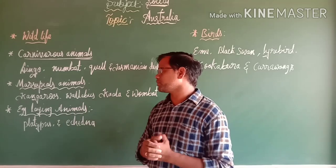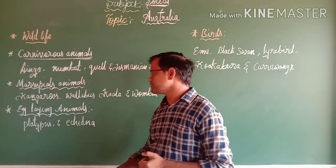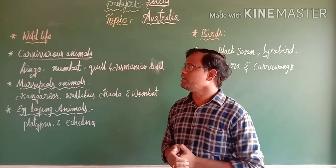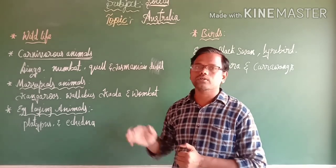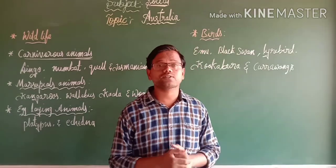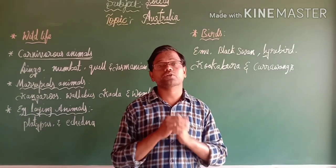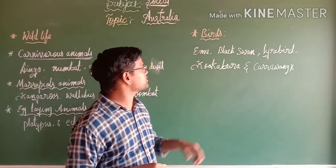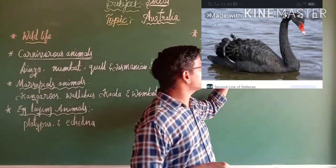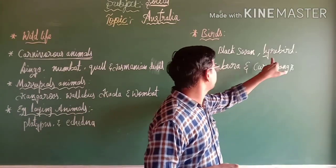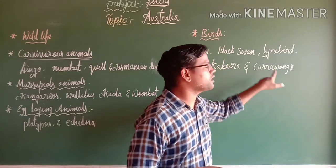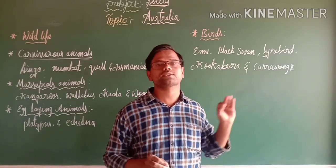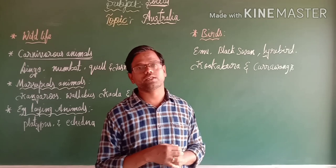The egg-laying animals include platypus and echidna. The important birds we can see in Australia continent are emu bird, black swan, lyre bird, kookaburra, and currawongs.